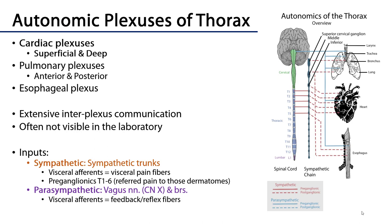Let's talk about those inputs. It's an autonomic plexus, so there's got to be both sympathetic and parasympathetic inputs. Within the thorax the sympathetic inputs are all coming from various ganglia of the cervical and thoracic sympathetic trunks. The preganglionic sympathetic fibers are coming from typically the T1 through T5 level, but can also include T6, though most of the outflow is T1 through T5 for the thorax.